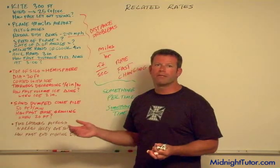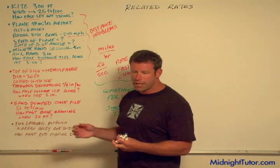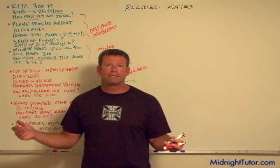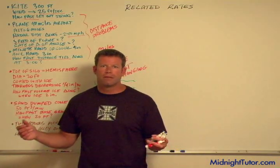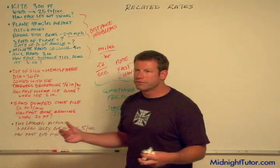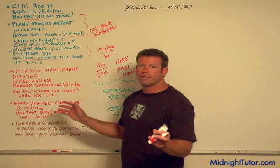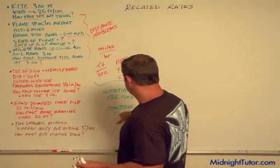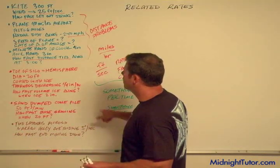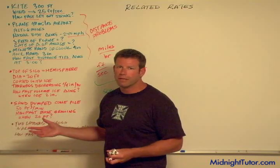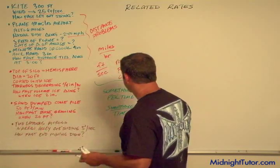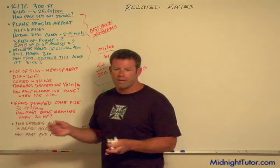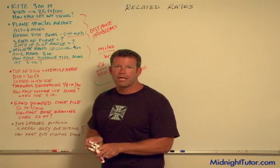The key to solving a related rate problem is to recognize what facts you're given — it's like doing a CSI investigation. What are the facts? In this case you're given some type of a rate — something per time — and then you're asked to find some other rate. In general, what you're going to use is a variation on the chain rule.